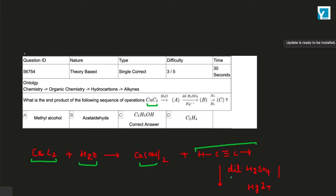When we react with dilute sulfuric acid, we get a carbonyl product. When we then react with nickel and hydrogen, it will reduce the double bond.